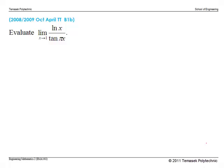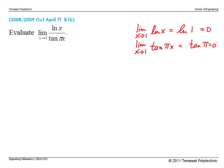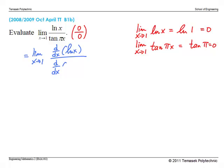In this next problem, we again check the limits of the numerator and denominator separately. Both limits are 0, so we get the indeterminate form 0/0. This is the L'Hospital's Rule condition. Therefore, by L'Hospital's Rule, this limit equals the limit of the derivative of the numerator divided by the derivative of the denominator.